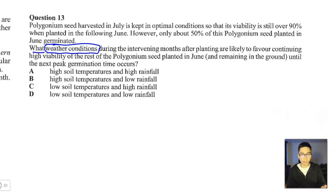So what weather conditions? We can see that they're referring to the weather conditions in the answer options. So specifically, we're interested in soil temperatures and rainfall, whether it's high or it's low. Now, what's the criteria? So we're interested in the conditions. The conditions are going to do what? If we keep reading. What weather conditions during the intervening months after planting are likely to favour continuing high viability of the rest of the Polygonum seed planted in June? So we're interested in a situation, the right soil temperatures and higher rainfall that's going to give us high viability. That's the result that we want. So the result that we want or the criteria. The result of the criteria is high viability.